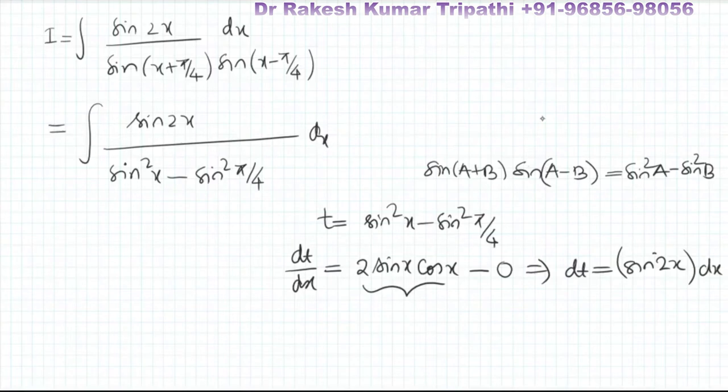So this integral will be I = ∫dt/t, and the integral of 1/t will be log|t| + C. Now we can substitute the value of t,